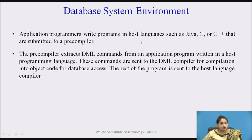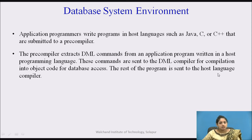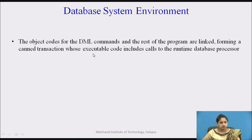Application programmers write programs in a host programming language such as Java or C++, which are subjected to the pre-compiler. The pre-compiler extracts the DML — Data Manipulation Language — codes such as insertion, deletion, updation, or retrieval. These DML commands are sent to the DML compiler for compilation into object code for database access. The rest of the program is sent to the host language compiler, and the two object codes are linked forming canned transactions whose executable code includes calls to the runtime processor.